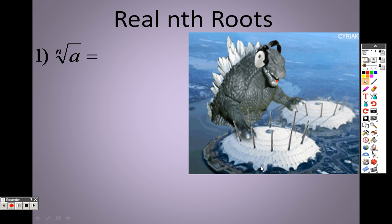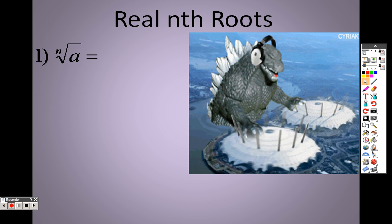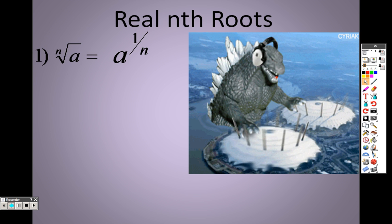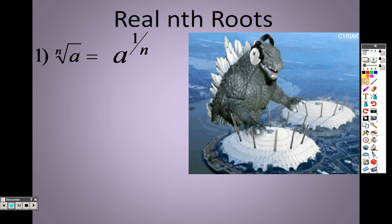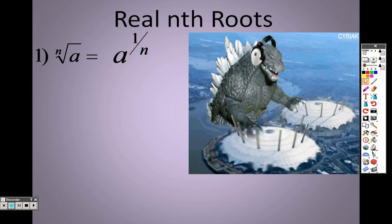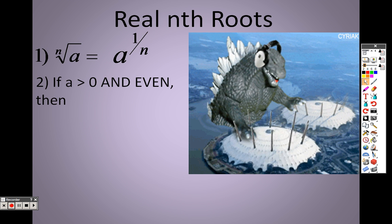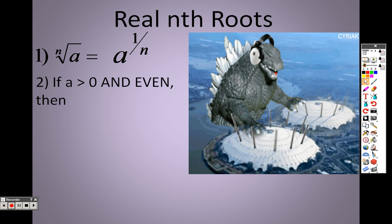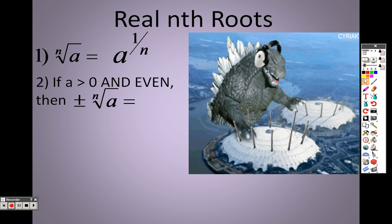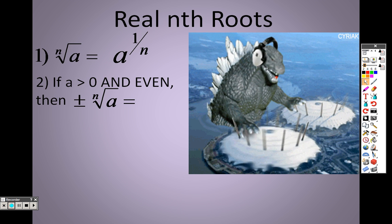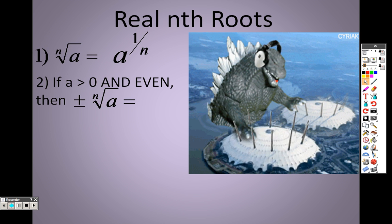So to look at these properties in different ways that we can rewrite this, the nth root of a, you can rewrite as a to the 1 over n. That's really all it is. You're rewriting it as a fraction, and whatever that number is, is the base, the denominator of that fraction. That's really all it is. If a is greater than 0 and even, then you have two answers. So the point we're getting at here is, if n is an even number, that's the key here, you're going to get two answers.